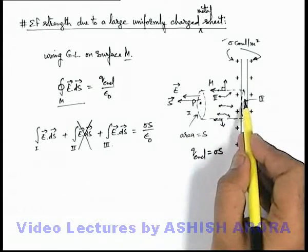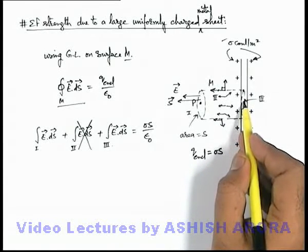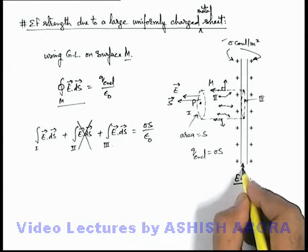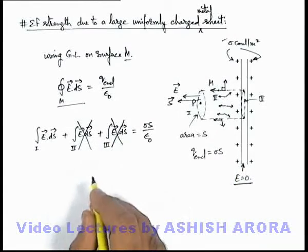For the section 3, as it is between the two surfaces of the sheet or it is inside the volume, we know in a metal body inside the volume always field is zero, so this will also vanish.